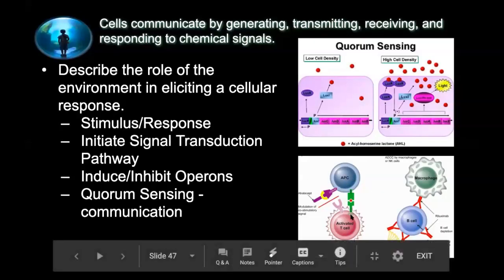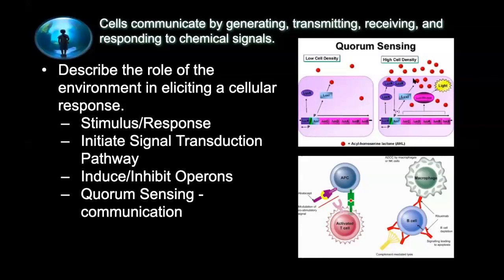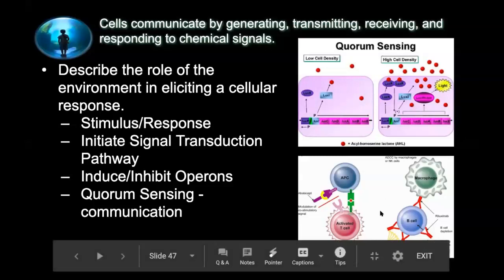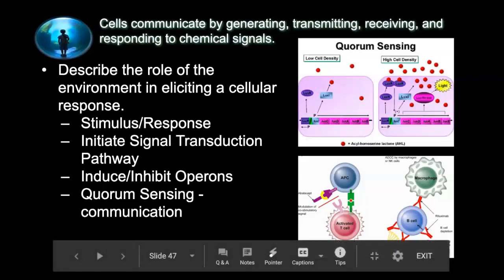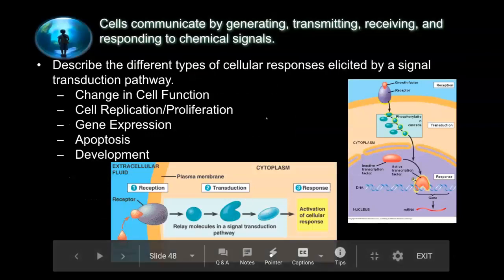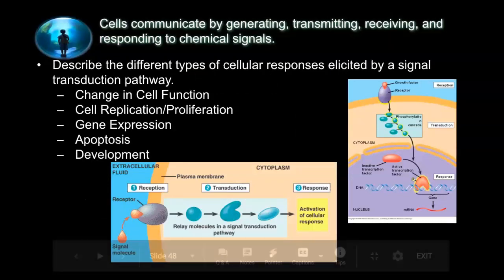The environment plays a role in eliciting cellular responses. The density of a signal molecule can turn on a gene (as in quorum sensing), and the presence of an antigen can cause a cellular response. For example, in bacteria: if glucose is present, a gene is turned on to break it down; if there is plenty of tryptophan, the gene for tryptophan synthesis is inhibited — that's gene regulation.